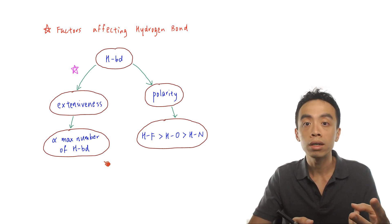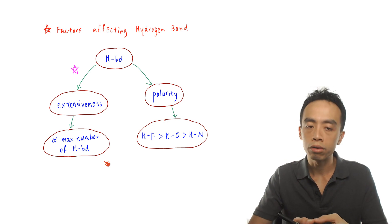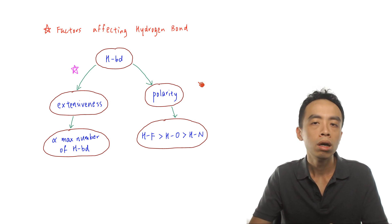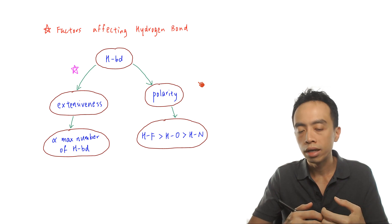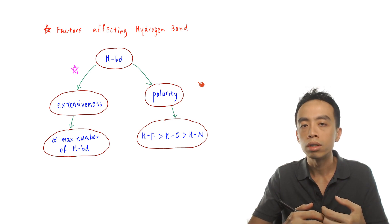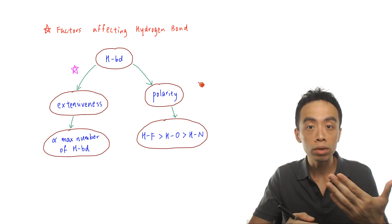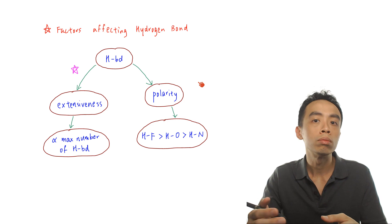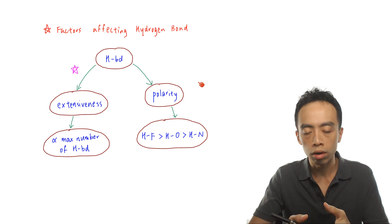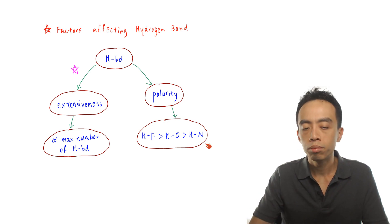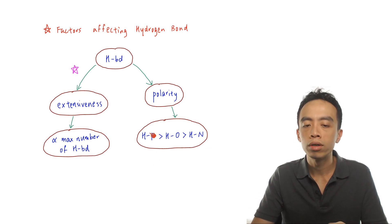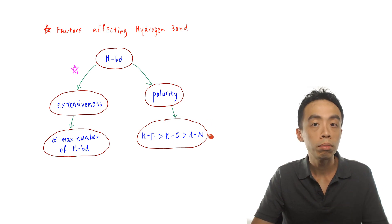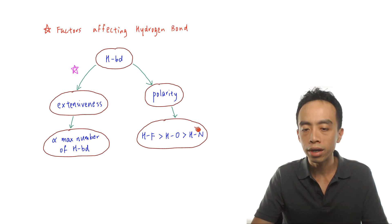The second factor which affects the strength of the hydrogen bond will be the polarity of the bond. This is related to the difference in electronegativity between the H-F bond, H-O bond, and H-N bond. Because H-F bond is more polar than H-O bond, which is in turn more polar than H-N bond.